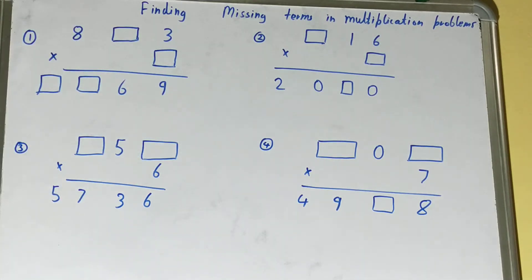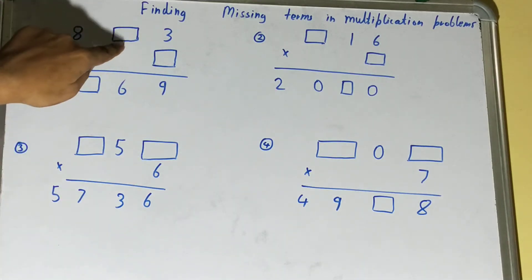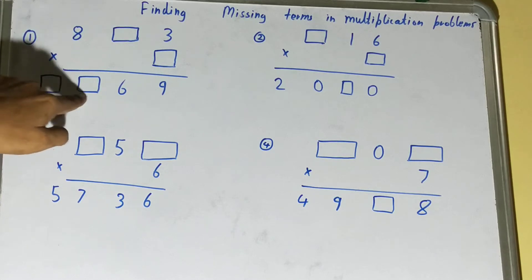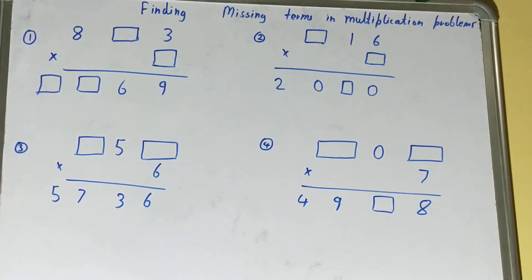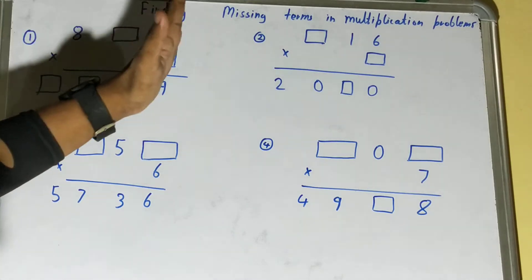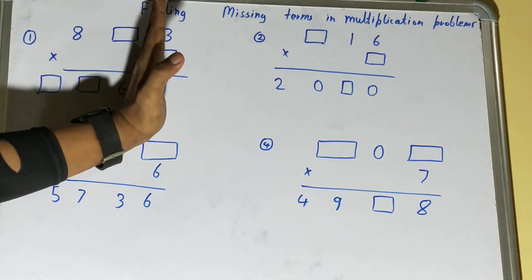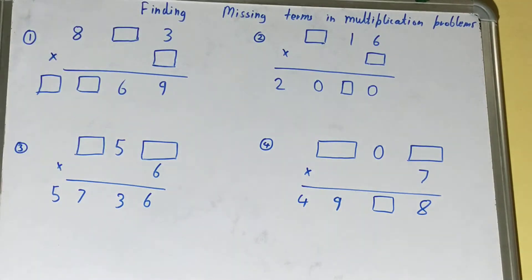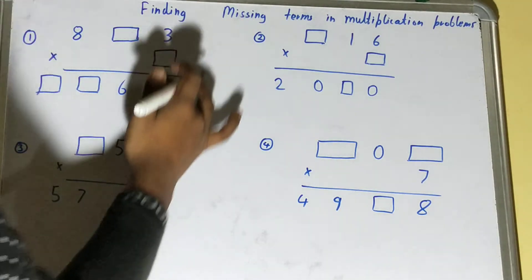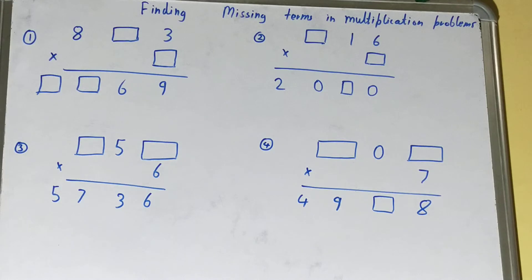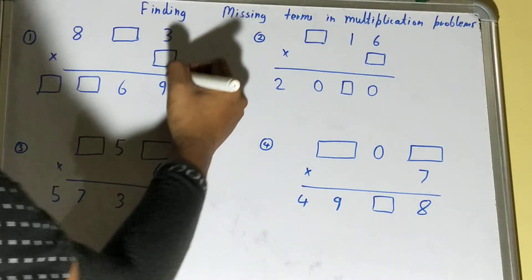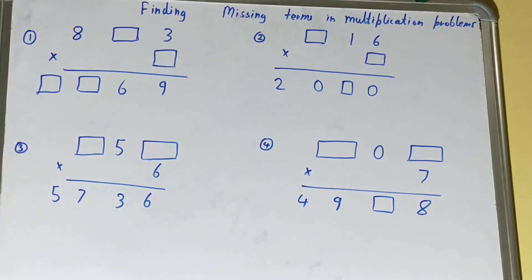Let's start with the first one. We can see we are having two boxes missing here. We'll take one digit at a time, one place at a time. First, let's look at the ones place — we need to multiply three with something to get nine. Try to think.